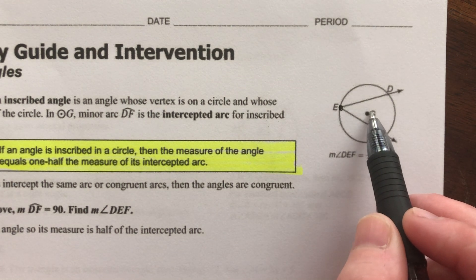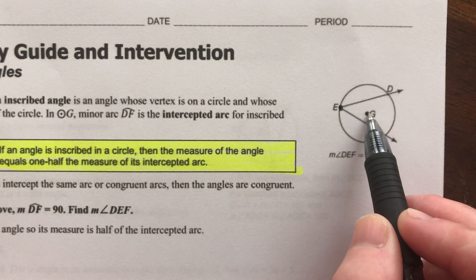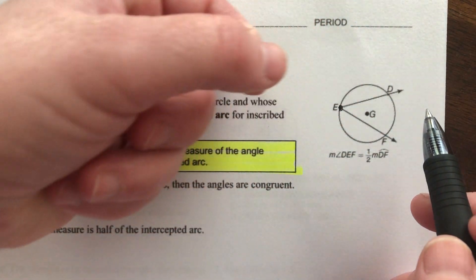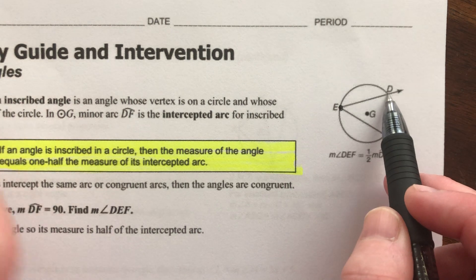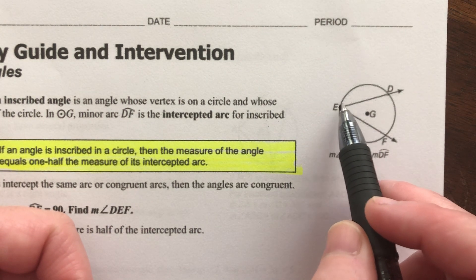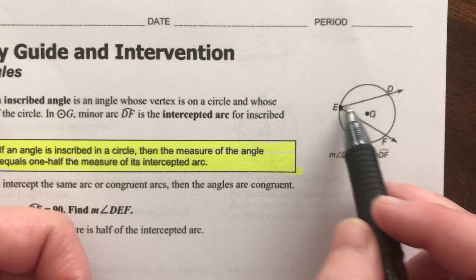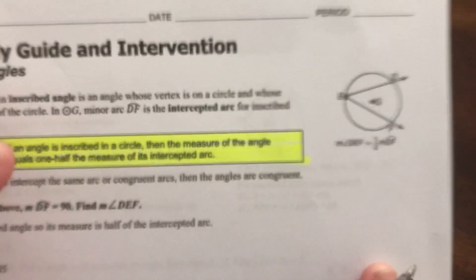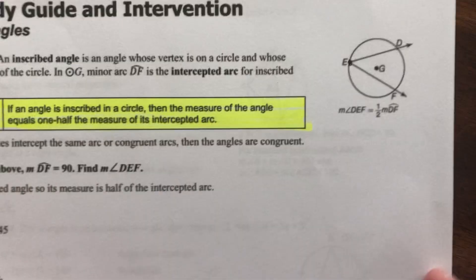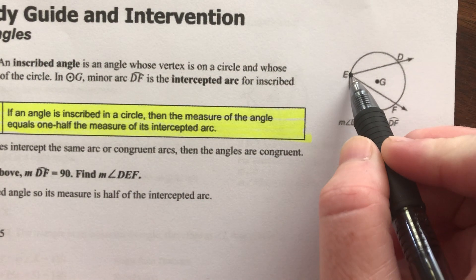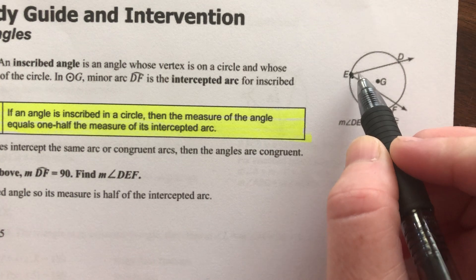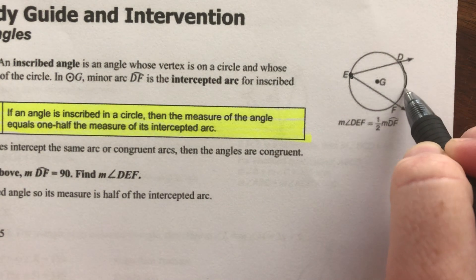Before, we were talking about angles where the vertex was at the center of the circle. Now it's like a rubber band — we've stretched that angle all the way back from the middle to the other side of the circle. Whenever we have an inscribed angle, it creates an intercepted arc.